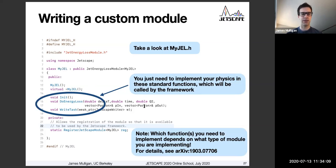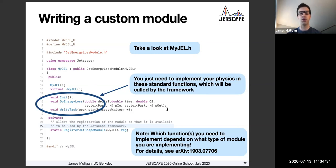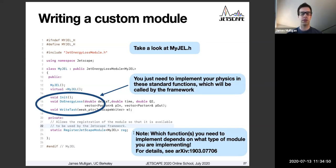These circled functions are the only functions your module needs to implement. They will be called by the framework automatically at the appropriate time. The do jet energy loss function takes some parameters: a vector of parton objects P in and another vector P out. Your module will have access to input partons that feed into it, and then you feed out output partons once you've done whatever you want in your jet energy loss. This is a specific example for implementing a jet energy loss module — for different types of modules, there are some different standard functions you'll need to implement.